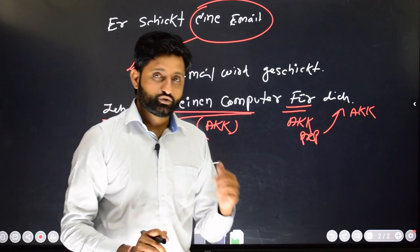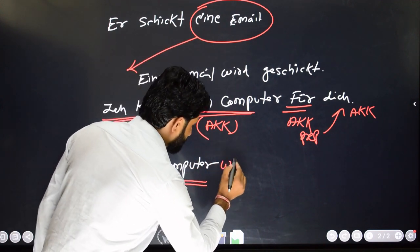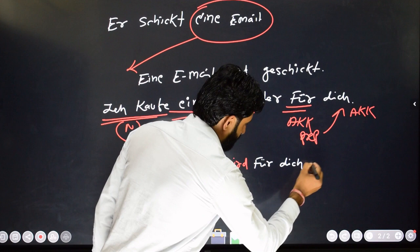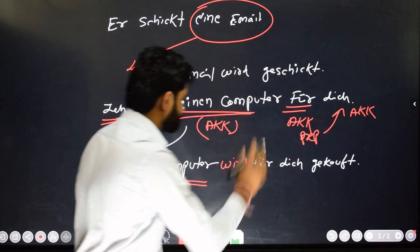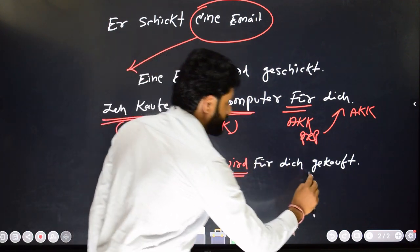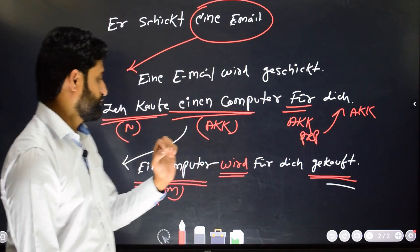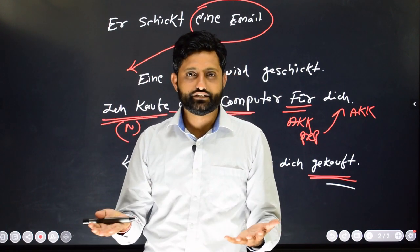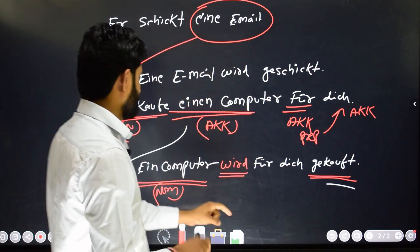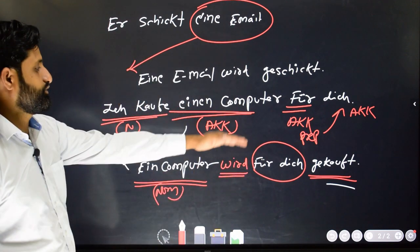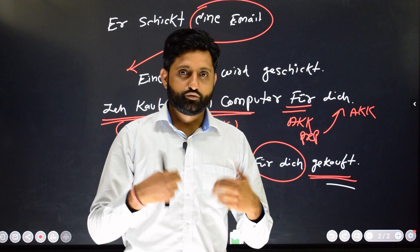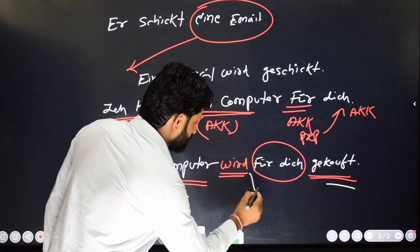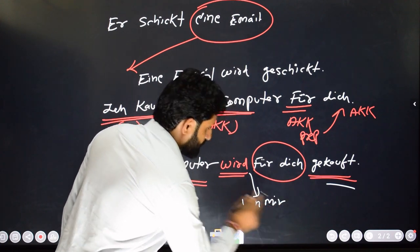So 'Ein Computer wird für dies gekauft.' Whenever we have a preposition in an active voice sentence, there won't be any changes to the preposition part in the passive voice sentence — the preposition part remains the same: 'für dies.' If I want to mention that the computer is being bought by me, I specify the person: 'Ein Computer wird von mir für dies gekauft.'